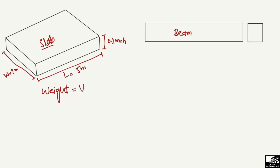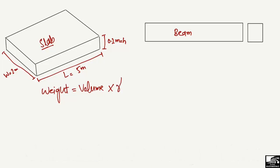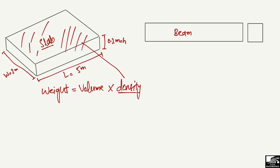To find out the weight of any structural member, we need two things: one is the volume of the structural member, and the other is the density of the material used to produce that member. For example, here concrete is used to produce this slab, so we will use the density of concrete.